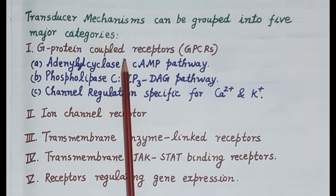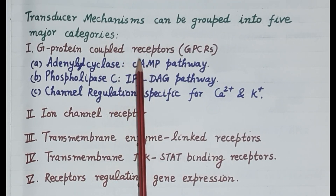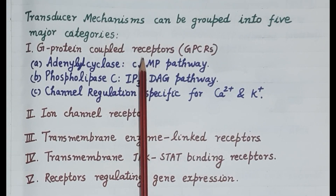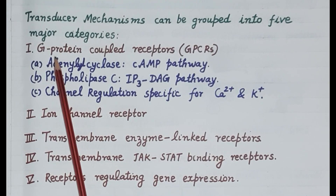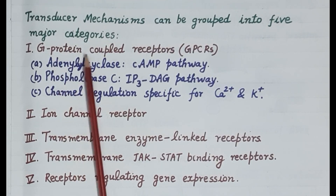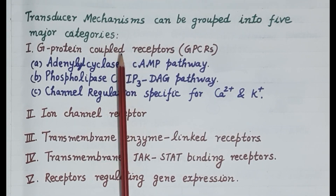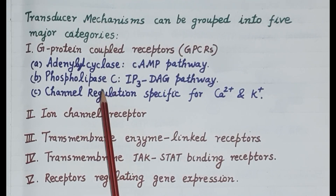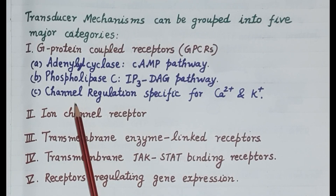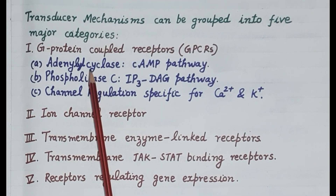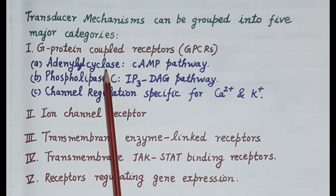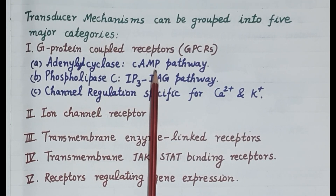The first type of transducer mechanism is G-protein coupled receptors. These receptors are linked to effectors — such as enzymes, ion channels, and carrier proteins — through G-proteins, which are GTP-activated proteins. There are three pathways: the adenyl cyclase pathway, the phospholipase C pathway, and ionic channel regulation. In the adenyl cyclase pathway, the enzyme adenyl cyclase is activated, mediating release of cyclic AMP (cyclic adenosine monophosphate) as second messenger in the cell.